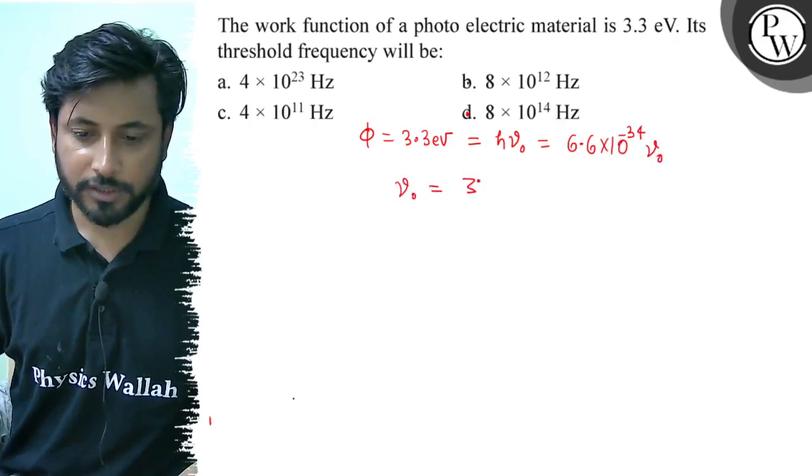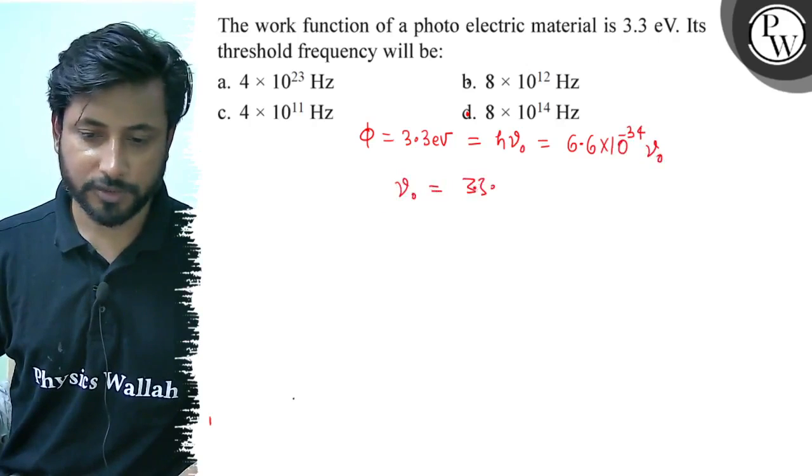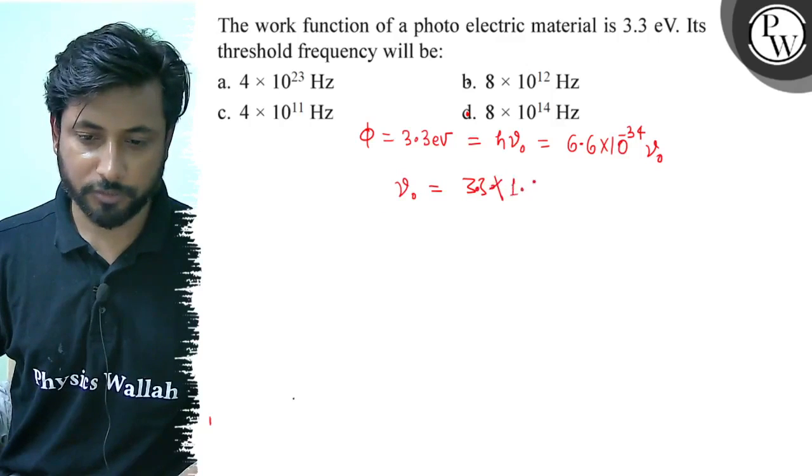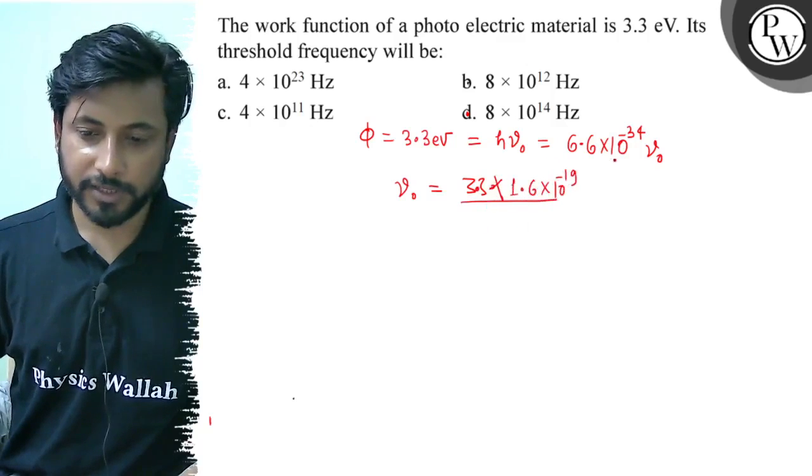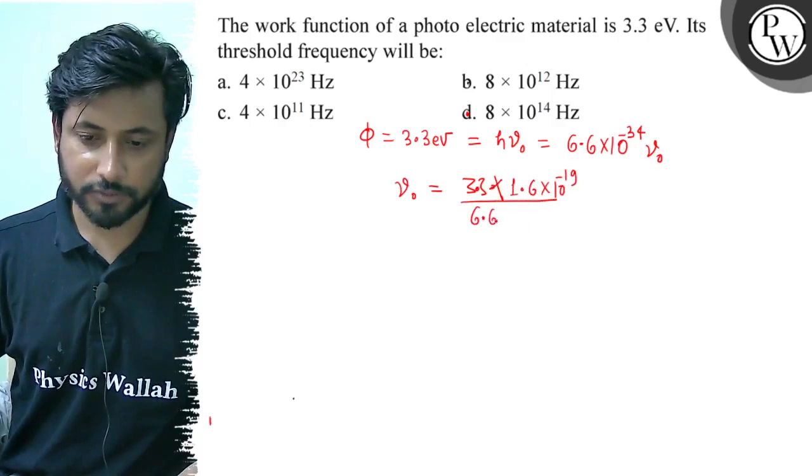ν₀ value is 3.3 electron volts. First convert 3.3 electron volts to joules: 3.3 multiplied by 1.6 × 10^-19 divided by h value, h value is 6.6 × 10^-34.